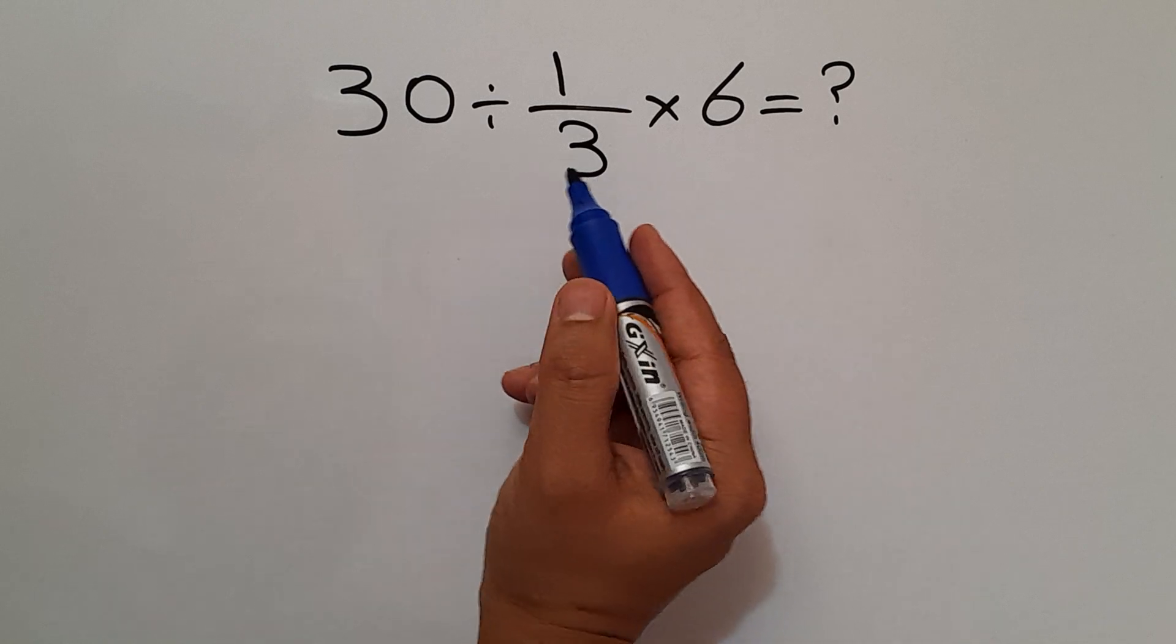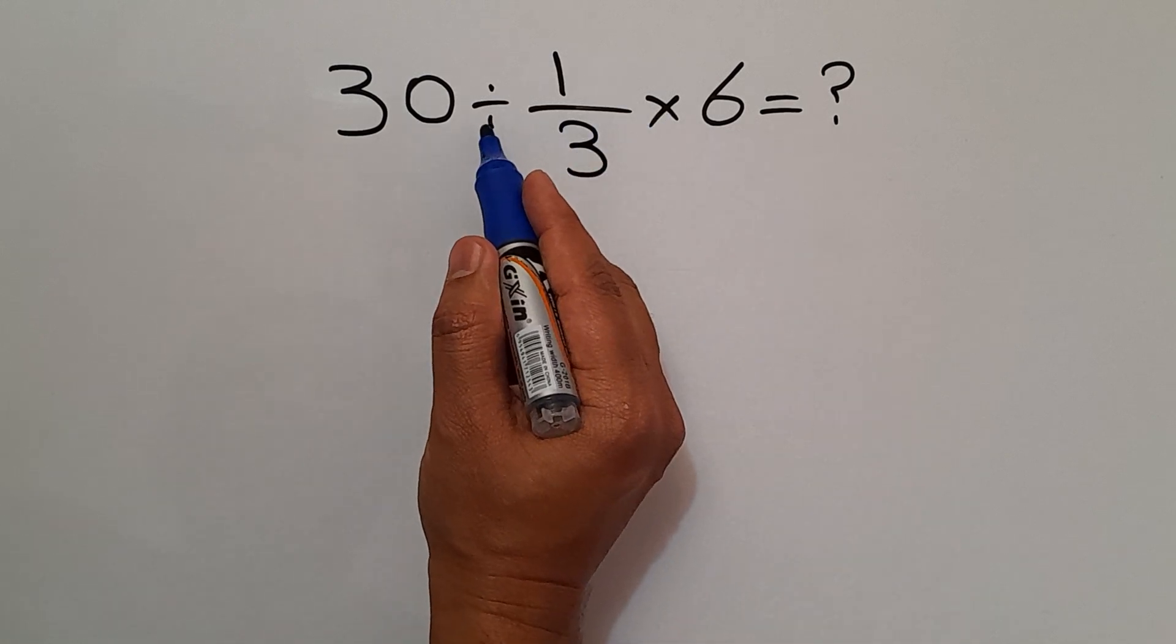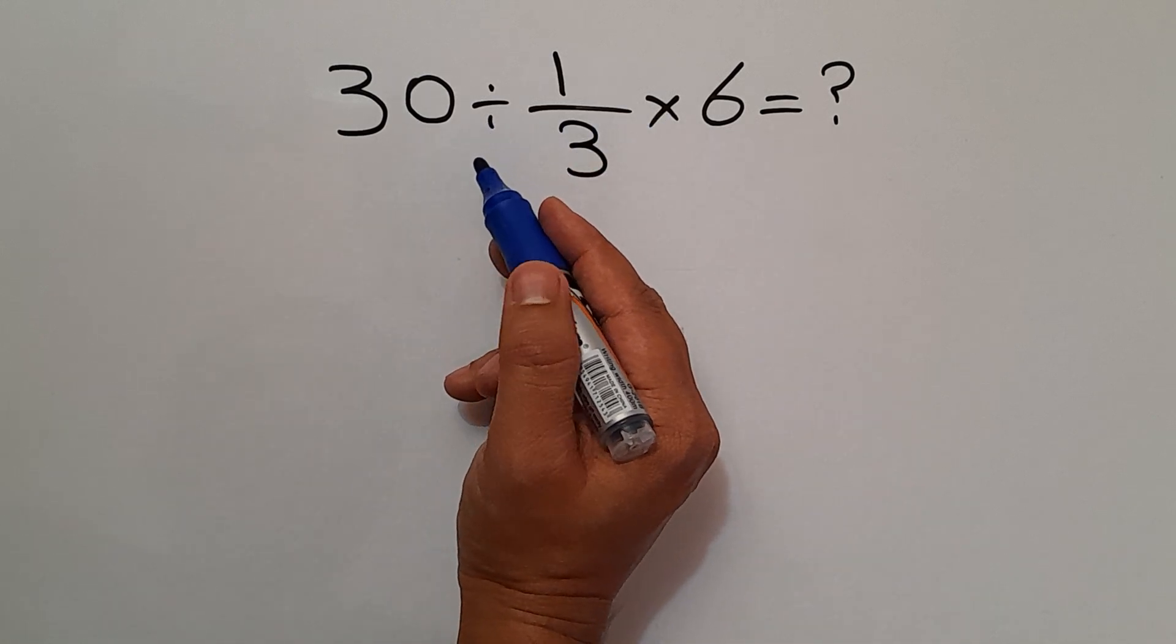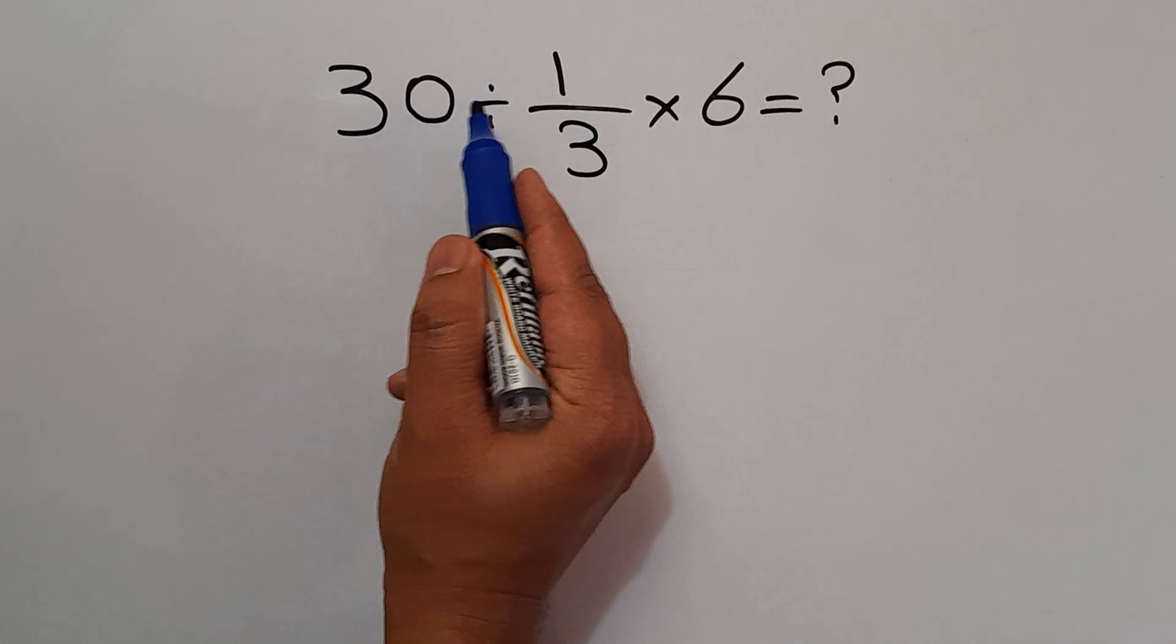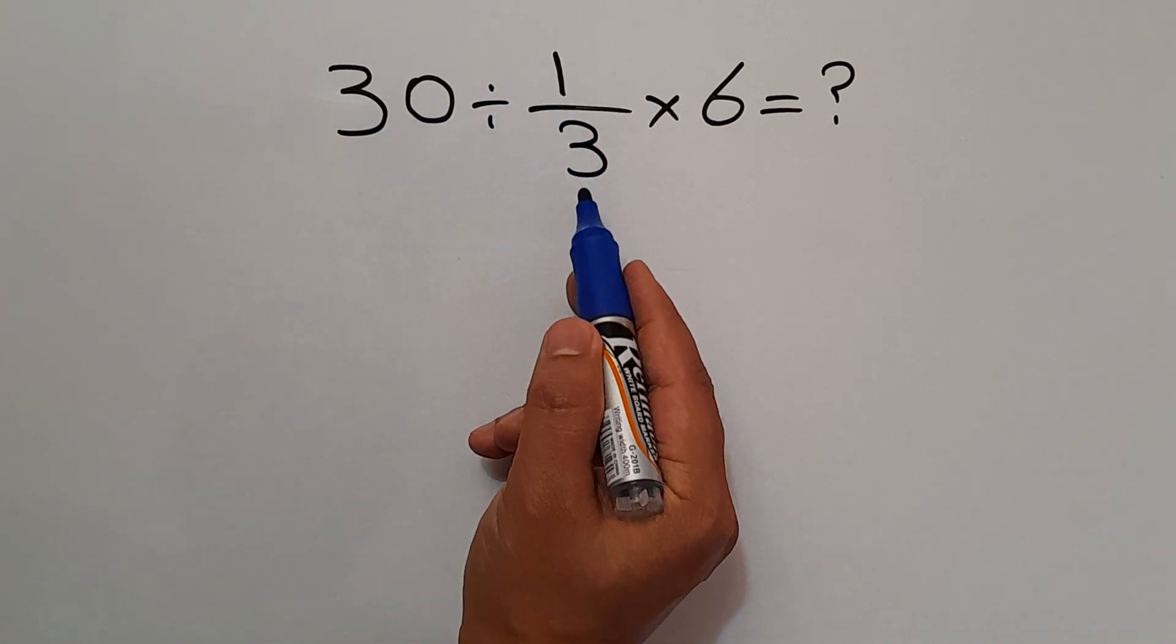Let's go ahead and start it. As we know, multiplication and division have equal priority and we have to work from left to right. So first, this division: 30 divided by 1/3.